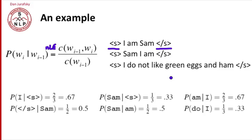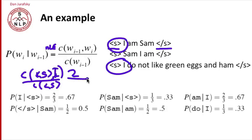First, probability of I given the start symbol. That's computed as count of start symbol comma I over count of start symbol. So I follows the start symbol twice, one, two, and the start symbol occurs three times, one, two, three.